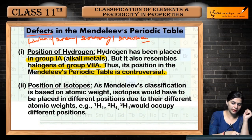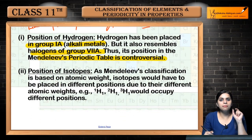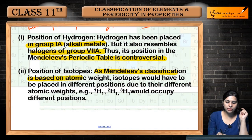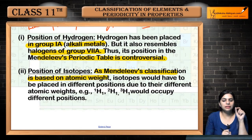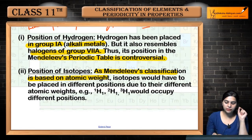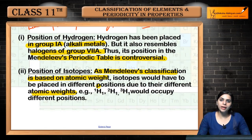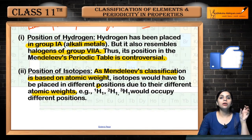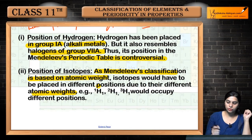The second defect is the position of isotopes. Isotopes have the same atomic number but different mass numbers. Since Mendeleev's classification is based on atomic weight, isotopes of the same element would have to be placed in different positions due to their different atomic weights. This creates a problem when one element has two or three isotopes.